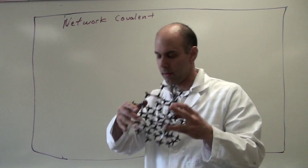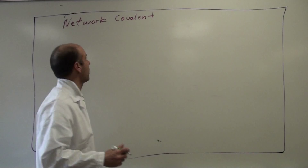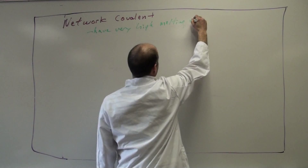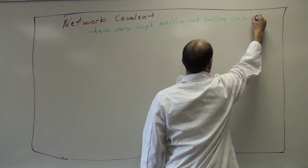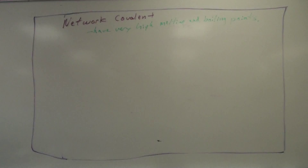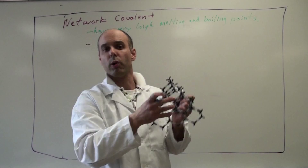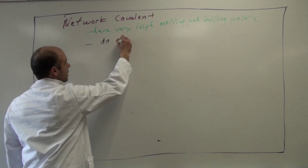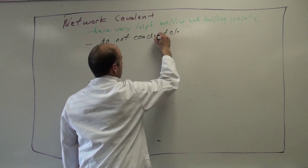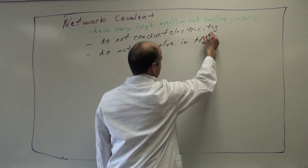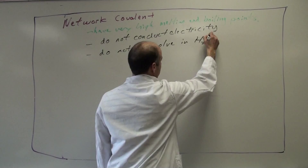Because of this repeating network pattern, network covalents have very high melting and boiling points. They also, because the bonds are so strong, have electrons stuck between the carbons — the electrons do not migrate throughout the molecule. Because of this, they do not conduct electricity, and they do not dissolve in water. So they are the strongest bonds that are covalent.